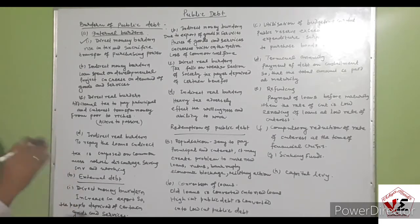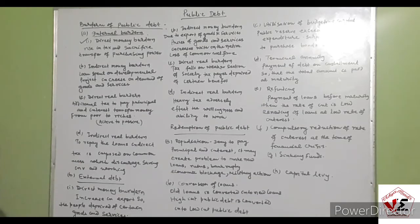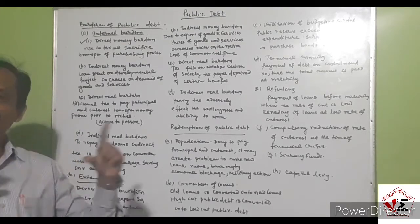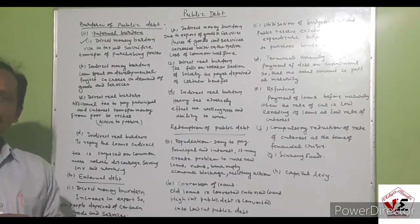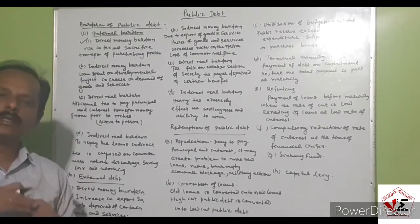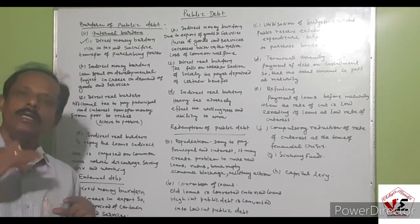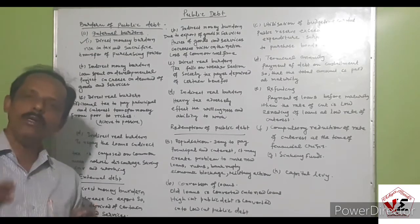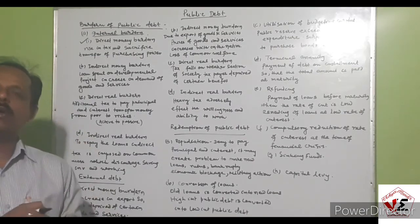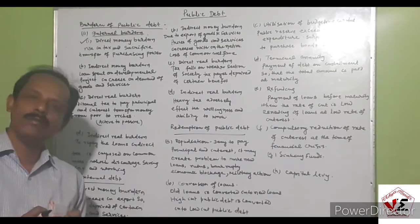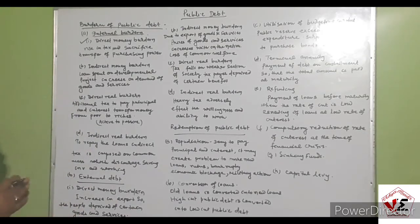The sacrifice of the people is involved, and the transfer of extra purchasing power of the people goes into the hands of the government to repay the public debt. The divergence between rich and poor will increase because the government raises debt from the richer section of society, and the taxes imposed transfer purchasing power to the government. Ultimately there is a circulation of money from the poor to the rich — that is the direct money burden.